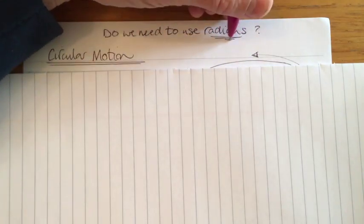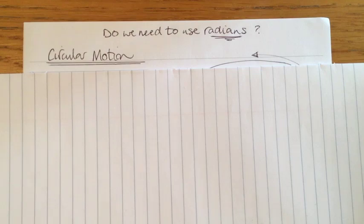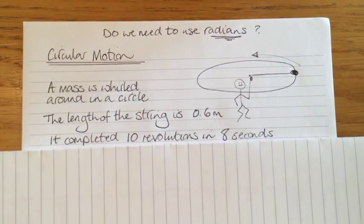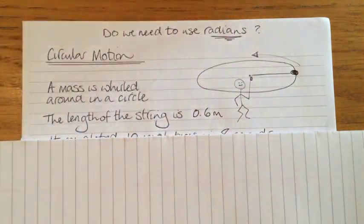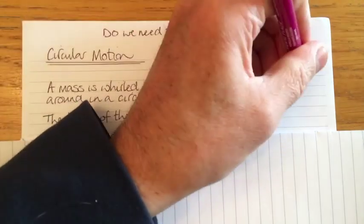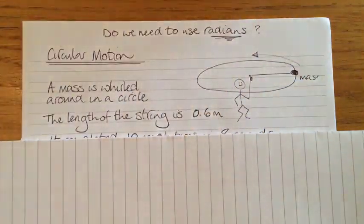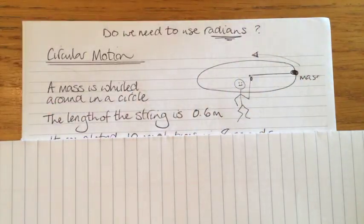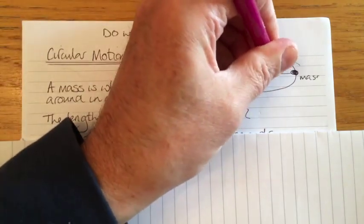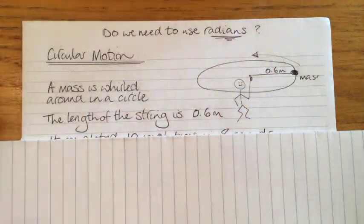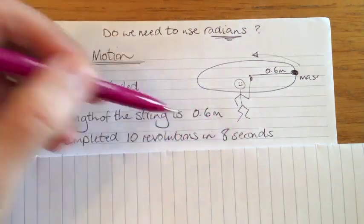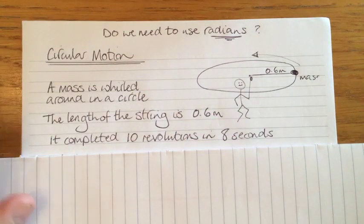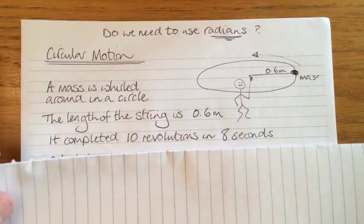I'm getting the impression from some people they don't like radians. We've got this wee example: a mass is whirled around someone's head. This wee guy has got a mass on the end of a bit of string, and he's whirling it about in a circle. Length of the string: 0.6 metres. And it completes 10 revolutions in 8 seconds. This is realistic because I've just tried it in my living room.